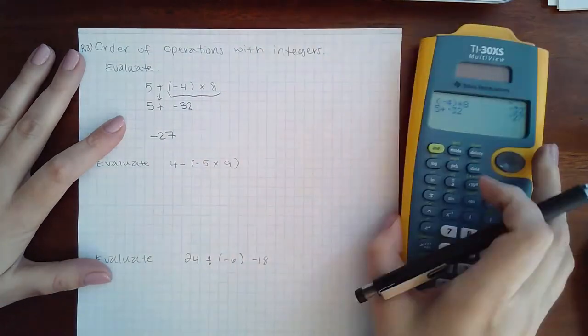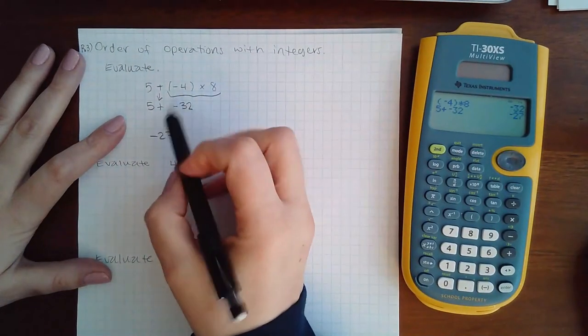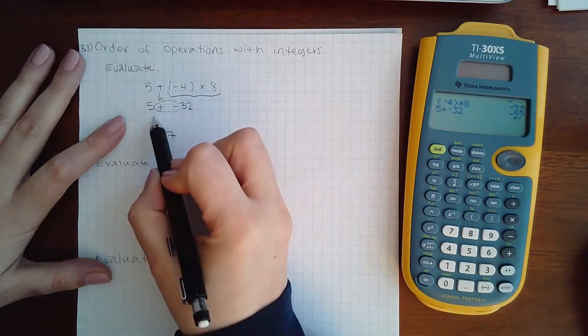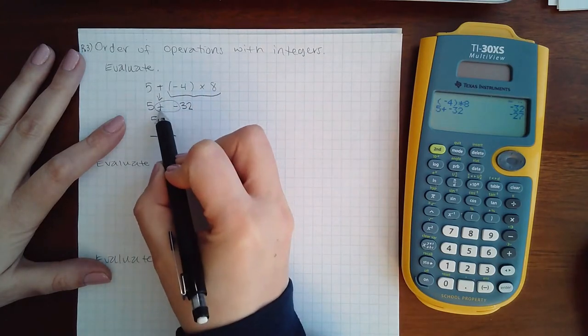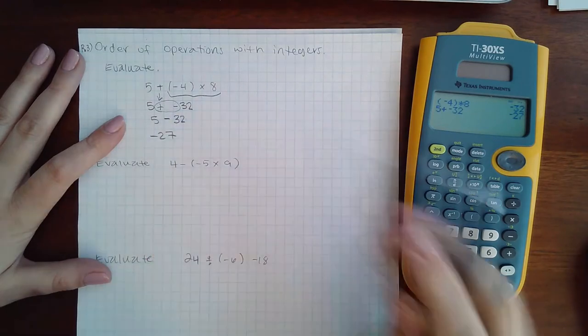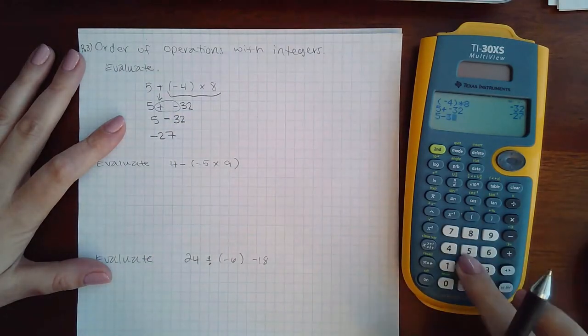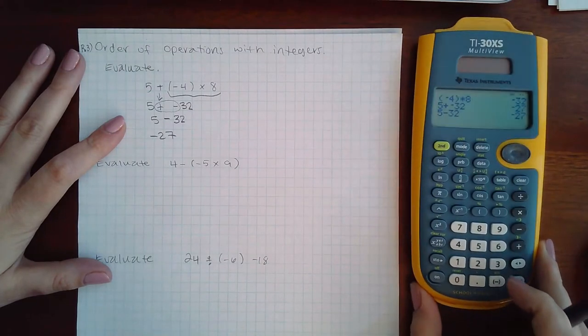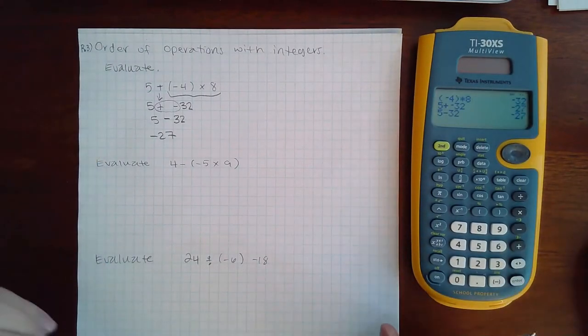You could have also, before using the calculator, multiplied these signs together because they are back to back. A positive times a negative is a negative. Then you could have typed in 5 minus 32 in your calculator and ended up with the same thing. Which way you do it is up to you.